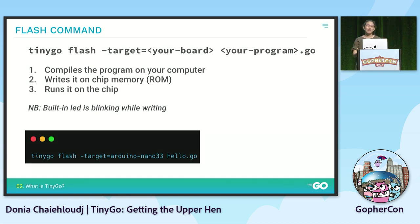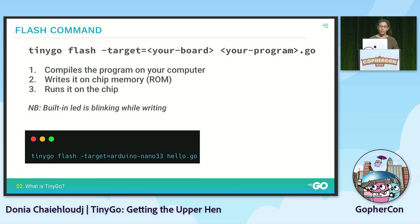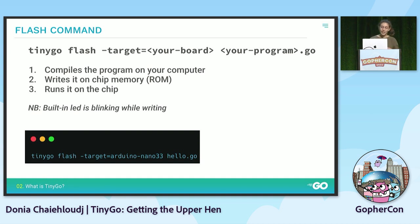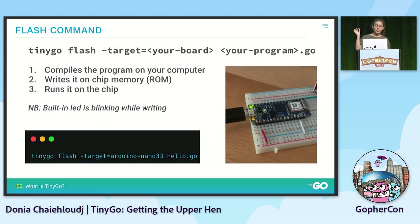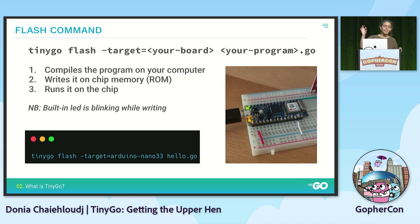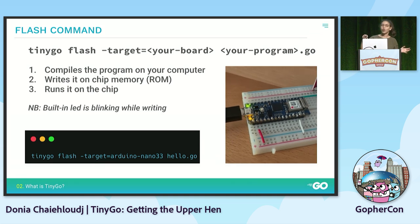The TinyGo flash command is the main one to actually write a program on a board or microcontroller. It compiles the program on your computer, writes it on the chip memory, and then runs it. You have to specify your target so the code knows which board you're talking to. Here I'm using an Arduino Nano 33 as the target and the program is called hello.go. A little tip: when you run and flash your board, there is a built-in LED that blinks.